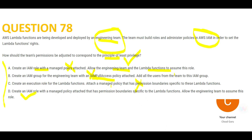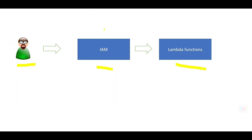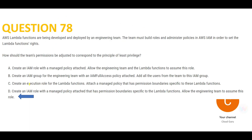That leaves us with option D, which is correct. We will create an IAM role and allow the engineering team to assume that role so they can access the Lambda functions. This is my final answer.